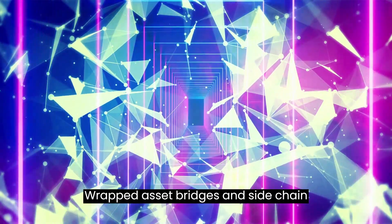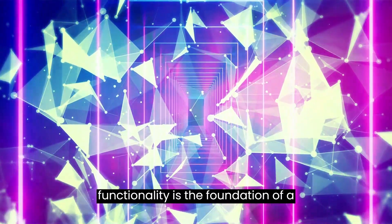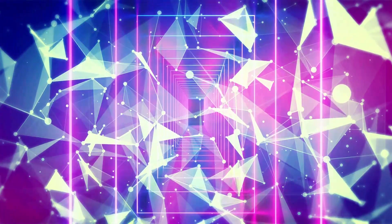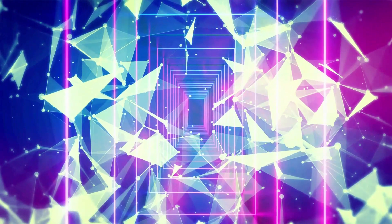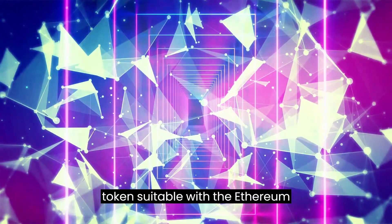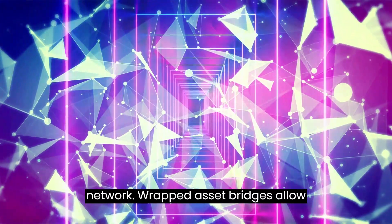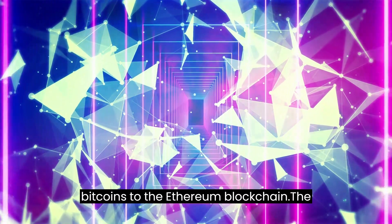Wrapped Asset Bridges and Sidechain Bridges: A blockchain bridge's functionality is the foundation of a unique categorization. Wrapped Asset Bridges and Sidechain Bridges are a couple of such examples. By wrapping bitcoins in Wrapped BTC, an ERC-20 token suitable with the Ethereum network, Wrapped Asset Bridges allow crypto portability, for instance, moving bitcoins to the Ethereum blockchain.